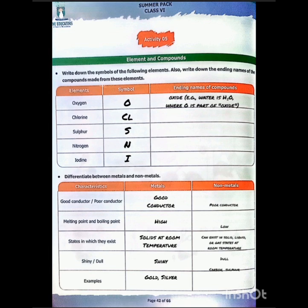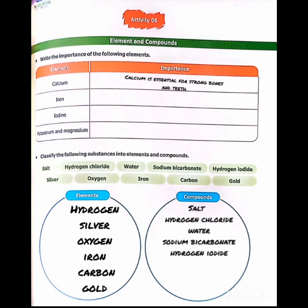Next, write down the ending names of compounds. We also have the difference between metals and non-metals — there are some points given, and by these points you have to differentiate between metals and non-metals, as I have shown you regarding their existence and melting points. Moving forward to activity number six.